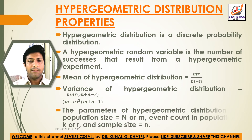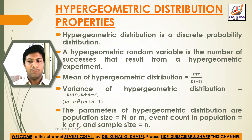The parameters of hypergeometric distribution are: population size, which is equal to N or M; event or count in population, which is equal to k or r; and sample size, which is equal to n.